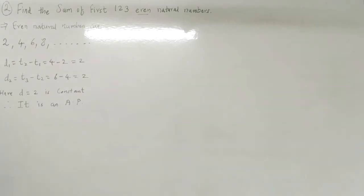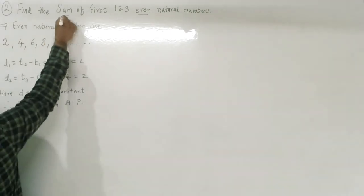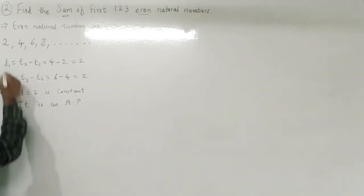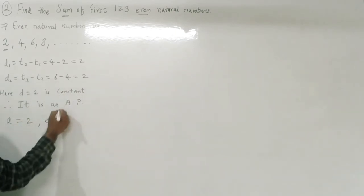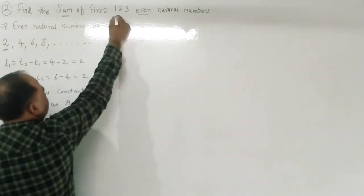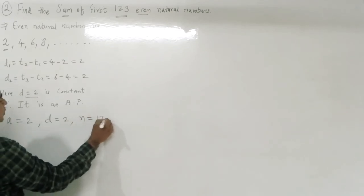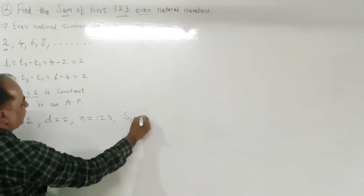Once we have proved the sequence is an AP, we can find the sum. First term a = 2, common difference d = 2, number of terms n = 123, and we have to find S123.